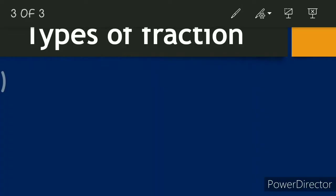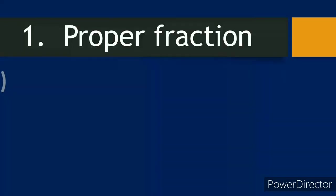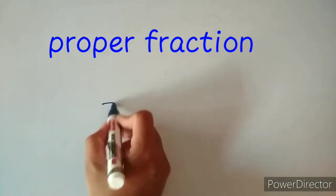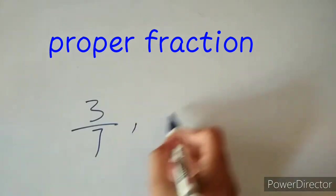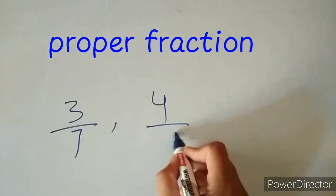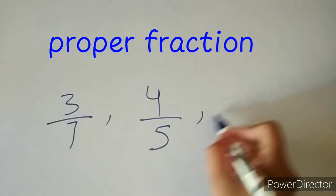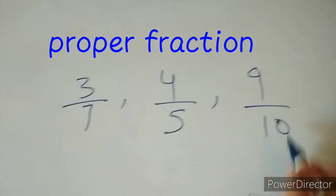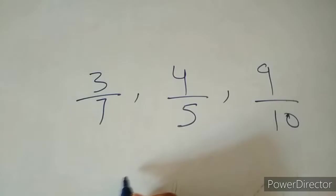There are four types of fraction. First: proper fraction. A fraction whose numerator is less than its denominator is known as a proper fraction. For example, three over seven, four over five — these are proper fractions because their numerator is less than their denominator.